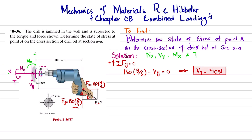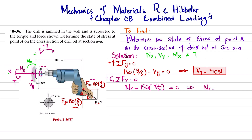Now we find the horizontal normal force NX using equilibrium. Taking positive X in the horizontal direction, NX minus the horizontal component — which is 150 × (4/5) — equals zero. So NX equals 120 Newton.